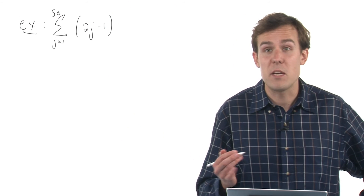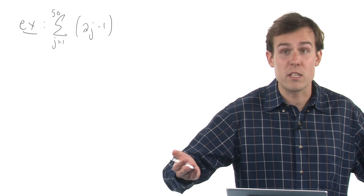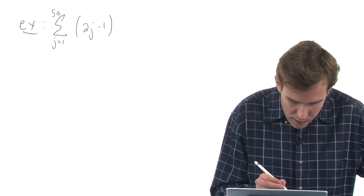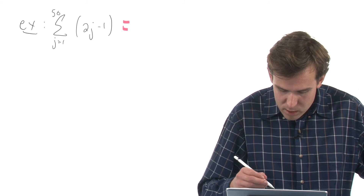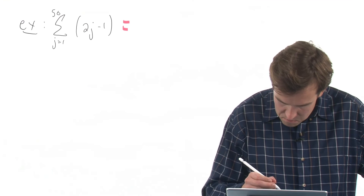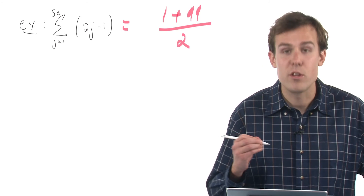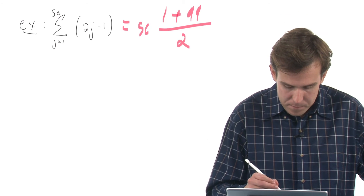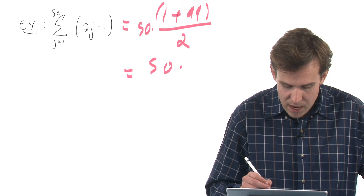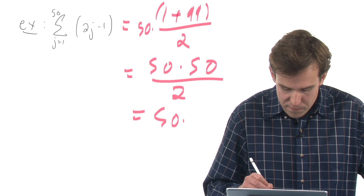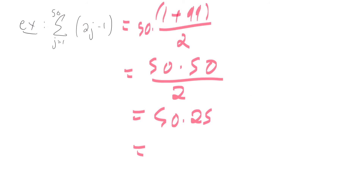Let's look at a similar arithmetic sequence — there are 50 terms in this, so it would take a very long time to add these up by hand. We can use our formula quite nicely: the first element, when j equals 1, gives 2(1) minus 1 equals 1; when j equals 50, I get 99. So I average those — giving 50 — and multiply by the number of things in the list, 50. So I get 50 times 50 divided by 2, which is 50 times 25, giving 1,250. A very nice way to handle a complicated-looking problem using the formula for arithmetic series.